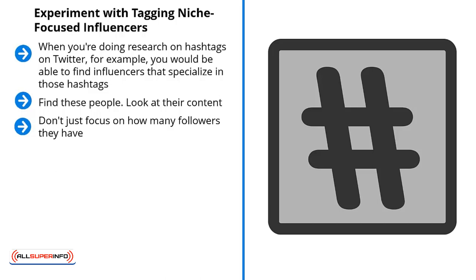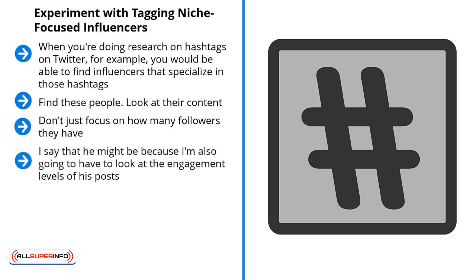It should be fairly easy to see which accounts are influential in your niche and which aren't. Don't just focus on how many followers they have. Instead, look at the total amount of engagement they get, and also pay attention to the ratio of followers to the number of accounts they follow. For example, if Mike Smith rotates among the 10 hashtags most relevant to your niche, look at his followers relative to who he's following.